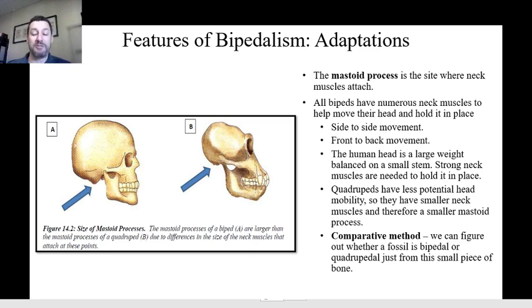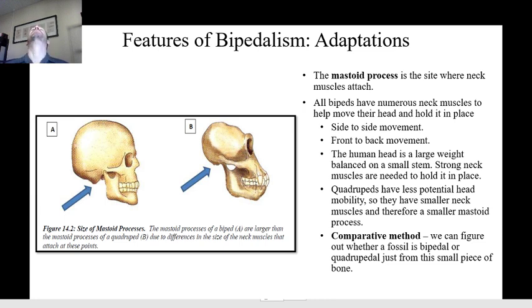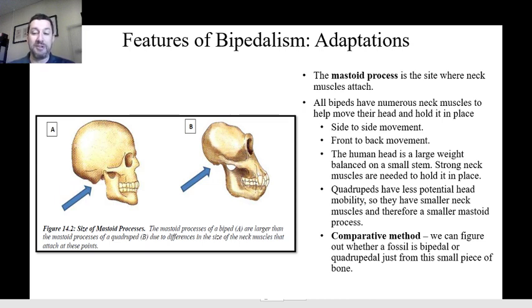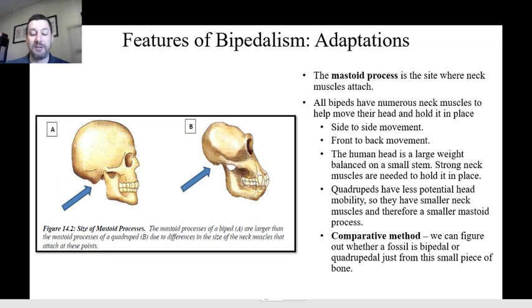Quadrupeds have less head mobility — a dog can move its head around but can't do the kind of big rolling motion or up-and-down motion that we can. Dogs can't crane their head all the way back; if a dog tries to look over its back it arches its whole back. We can just look totally up. They have relatively smaller neck muscles and a small mastoid process. We can go all the way back to the comparative method and realize that we can have just a small piece of a cranium and figure out whether that fossil was bipedal or quadrupedal based on the size of the mastoid process — that's a great piece of evidence when we have limited skeletons.